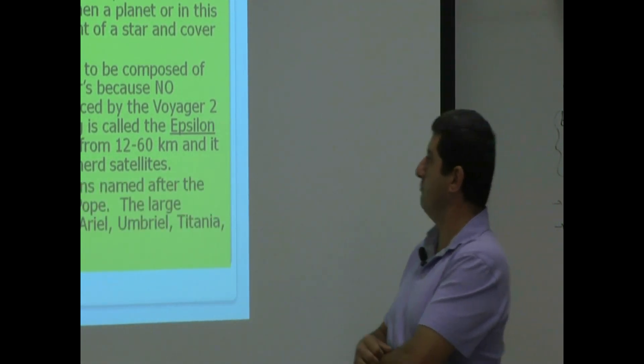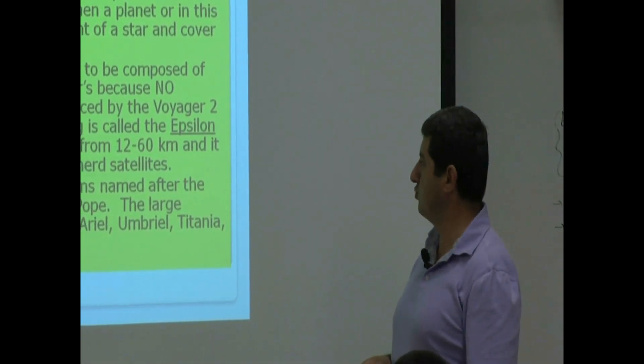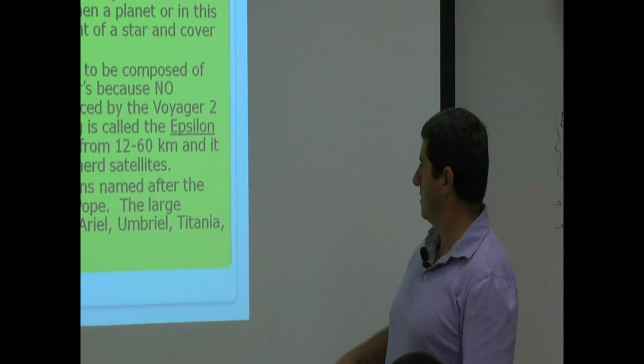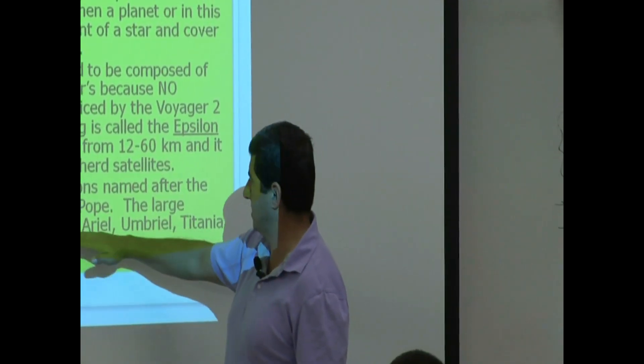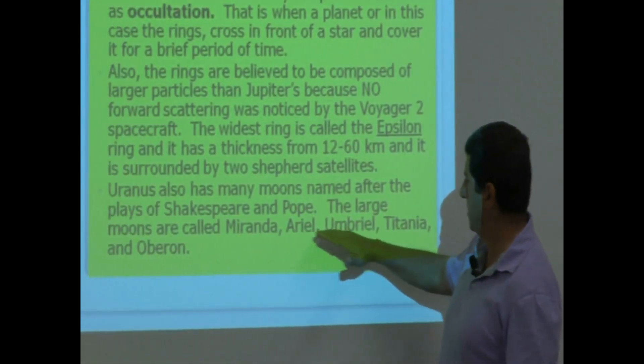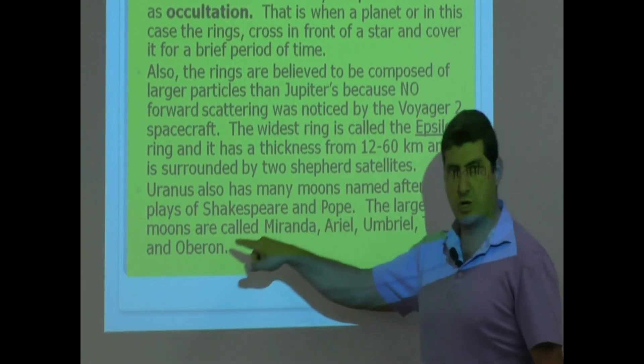Uranus also has many moons named after the plays of Shakespeare and Pope. The large moons of Uranus are called—there's five of them: Miranda, Ariel, Umbriel, Titania is the largest one, and Oberon.